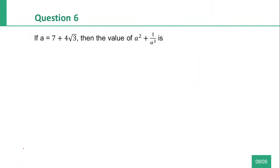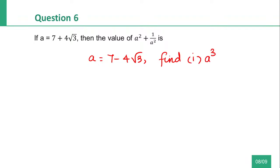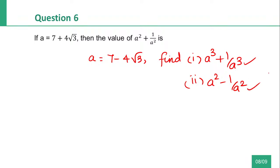Homework question: If A is equal to 7 minus 4 root 3, find the value of: 1. A cube plus 1 by A cube. 2. A square minus 1 by A square. Comment the answer. I hope today's class was useful for everyone. Thank you for watching. Have a great day.